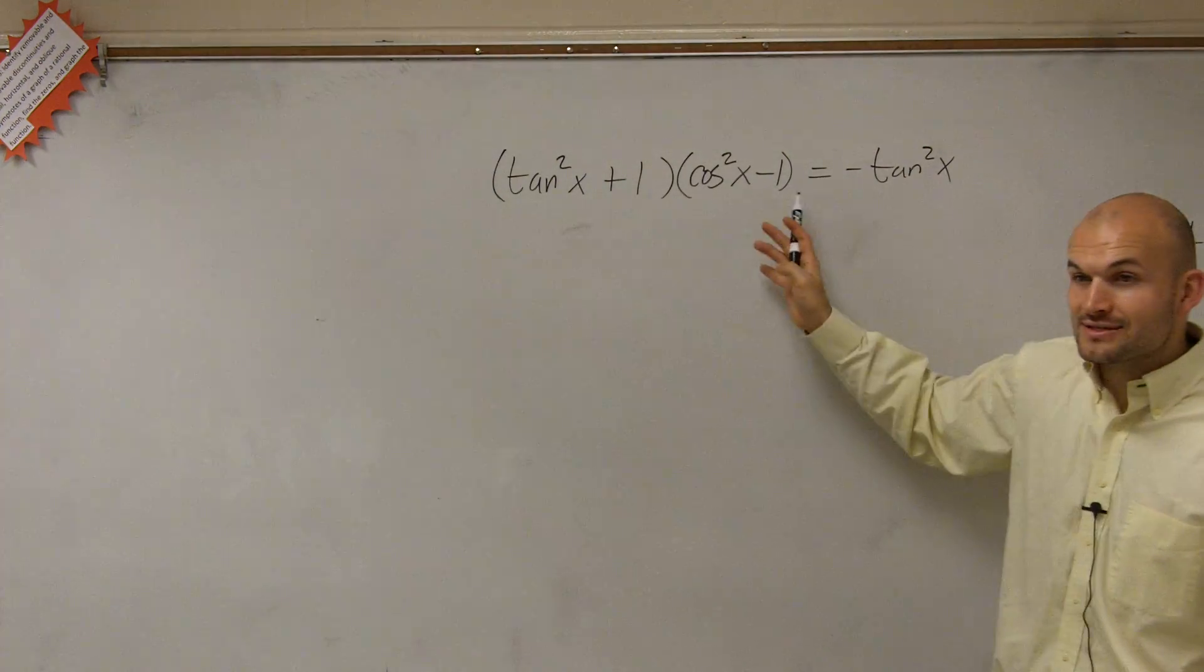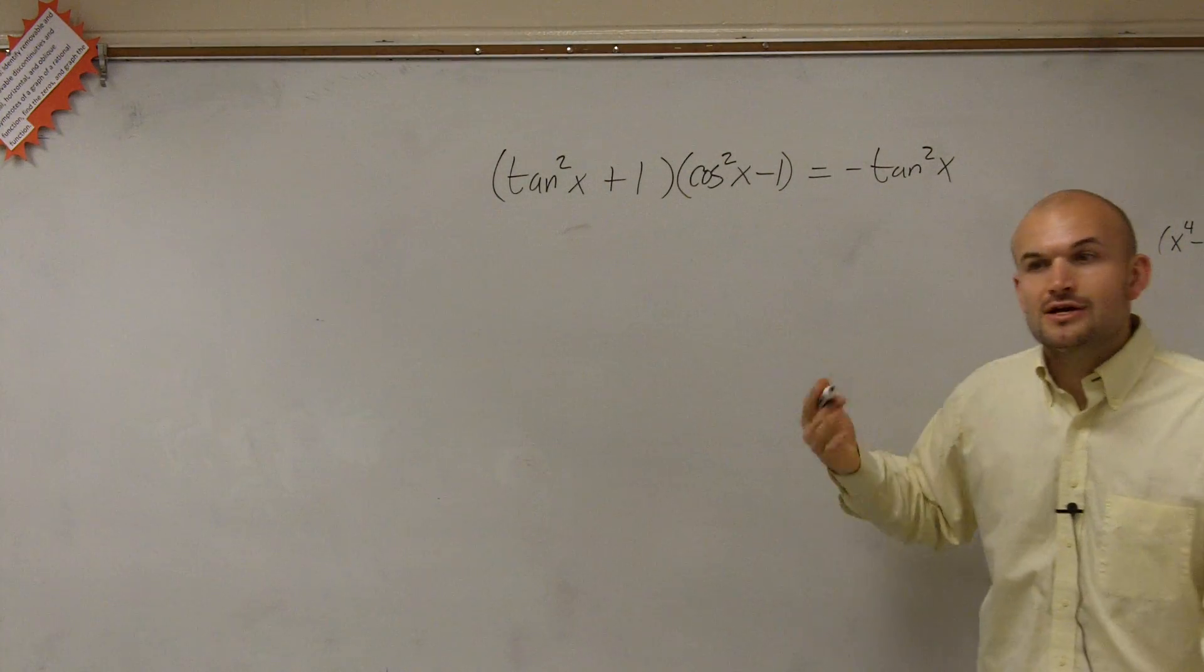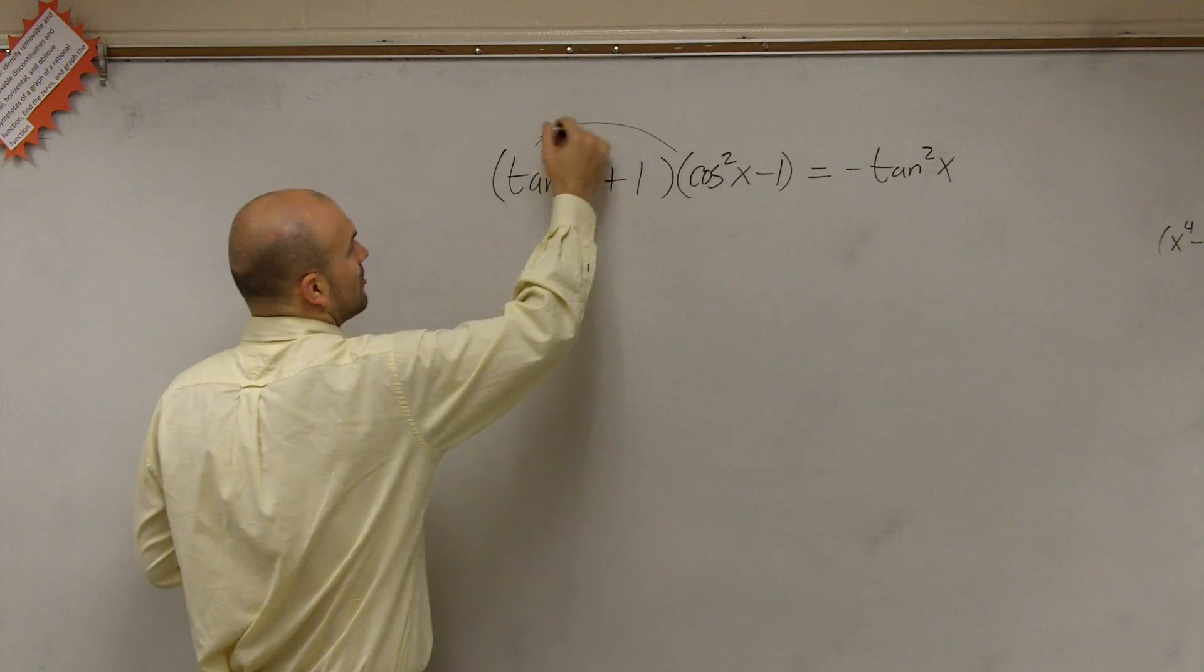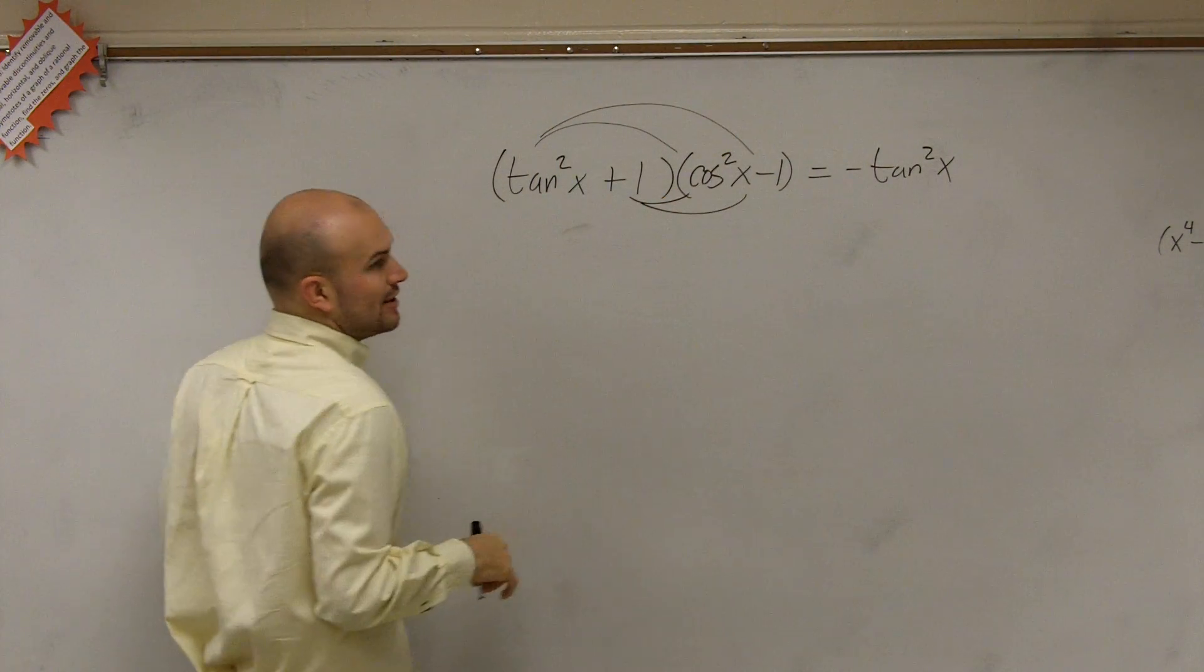It is a difference, but these are not the same square numbers. So therefore, we're going to have to apply FOIL, or just our property of multiplying two binomials.